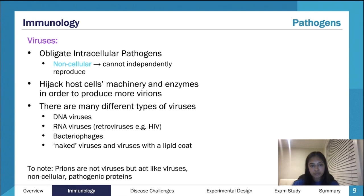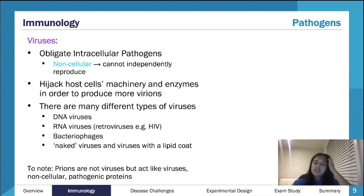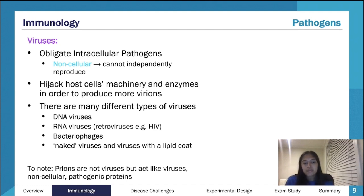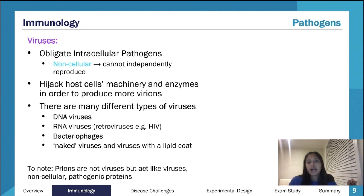A virus infects a cell, the genetic information inside its capsid is transcribed and translated, producing more virions, which then leave the cell and infect others — spreading the infection while killing host cells. Viruses can be classified by their genetic material — DNA or RNA. Bacteriophages infect bacteria specifically, not human cells, so they appear less often in VCAA questions except in the context of CRISPR. No specific virus needs to be memorized in detail.